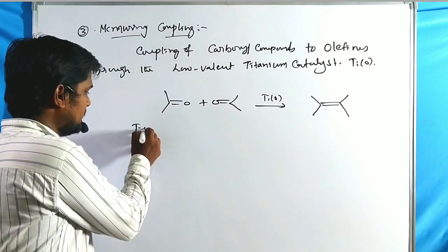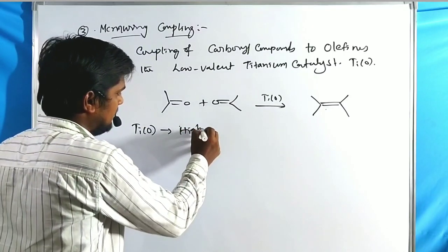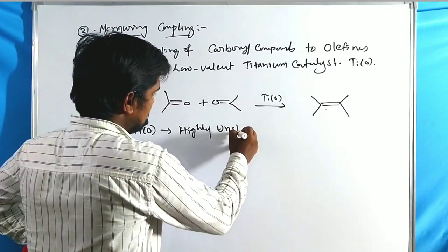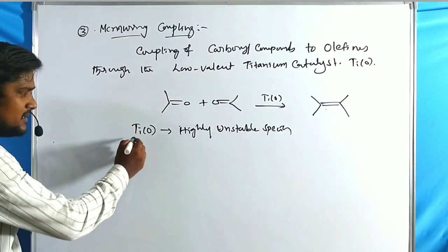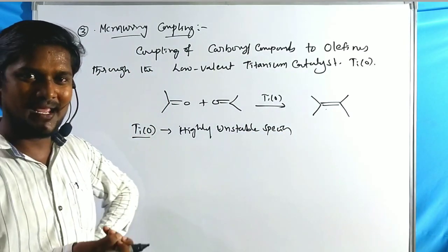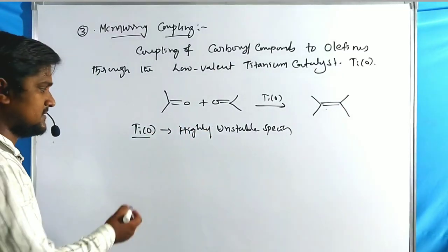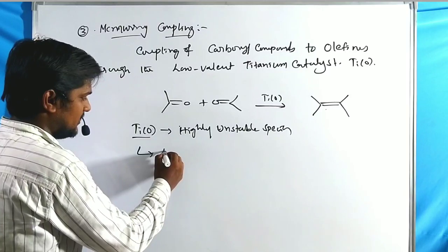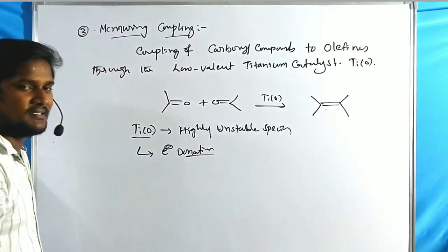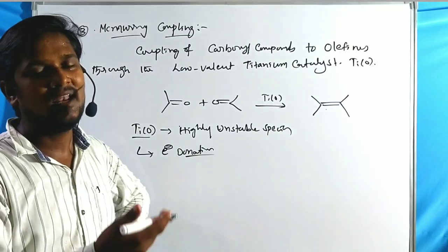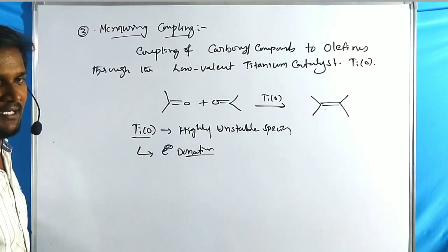Titanium zero species are very highly unstable. The advantage of titanium zero, being a low-valent catalyst, is that it easily donates its electrons — for example, to carbonyl oxygen — and then forms the oxygen-titanium bond.